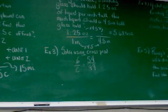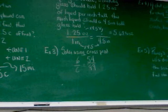So, the 4 and a half inch tall glass is going to hold 5.625 ounces of liquid.